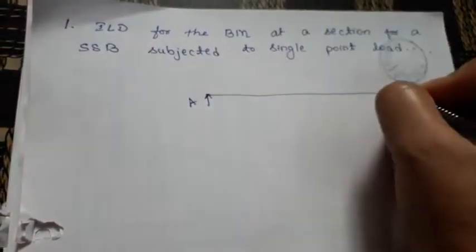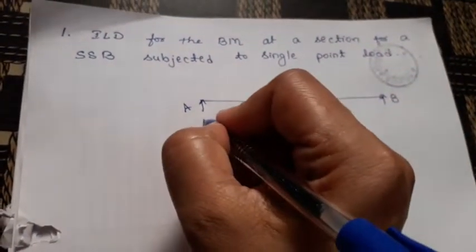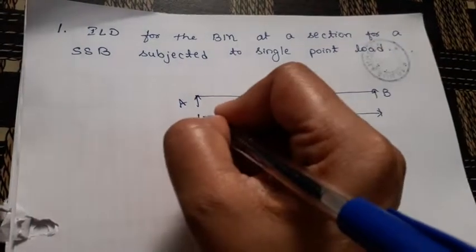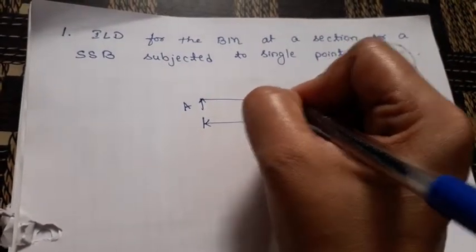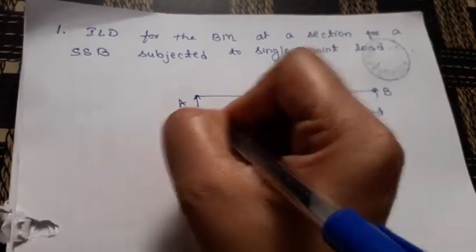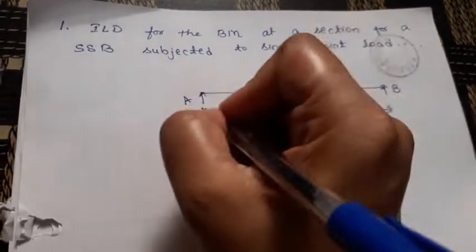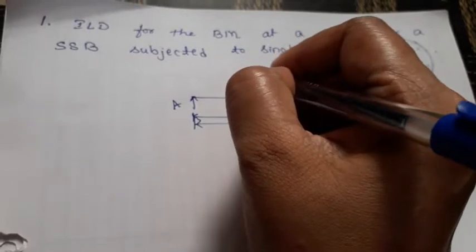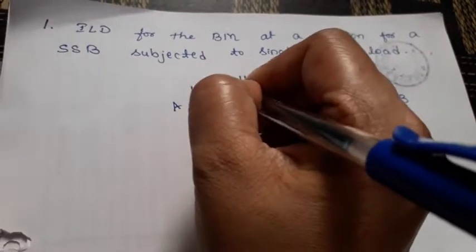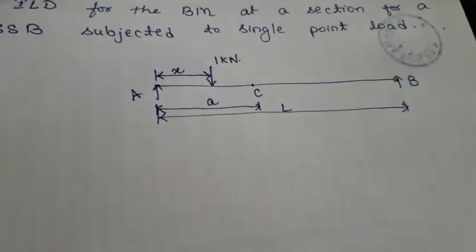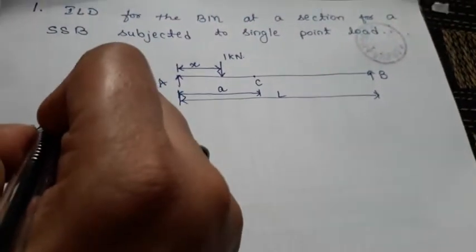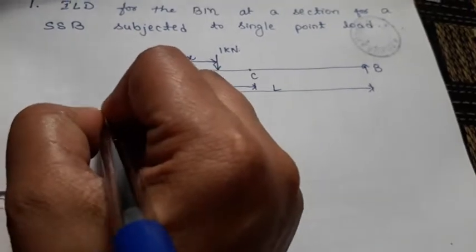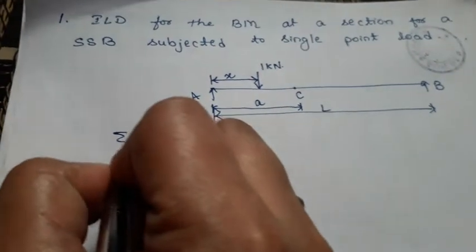Let us consider a beam AB of span L meters. Let us consider a section at a distance A from the left support, and consider a moving load acting at a point C at a distance X from support A. For this condition, we have to study the bending moment. First, find out the reactions RA and RB.